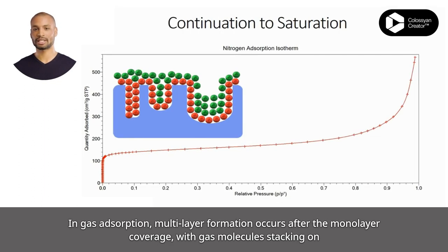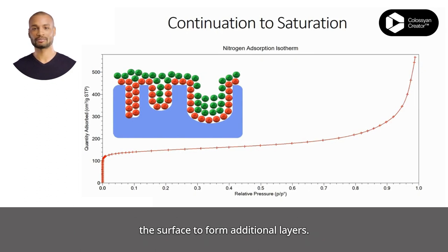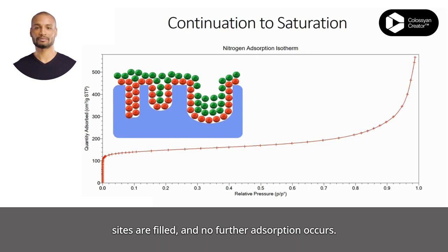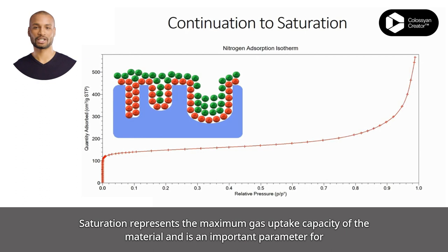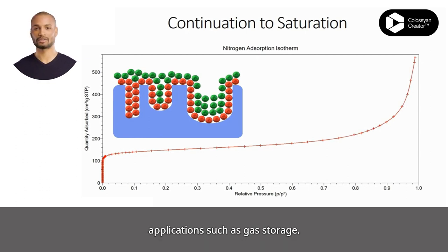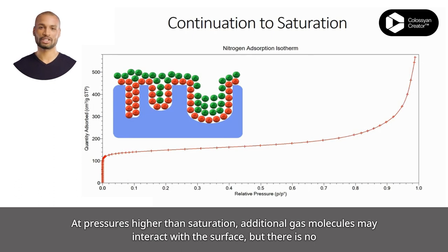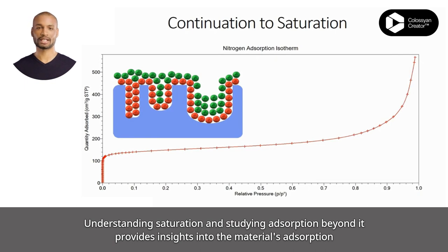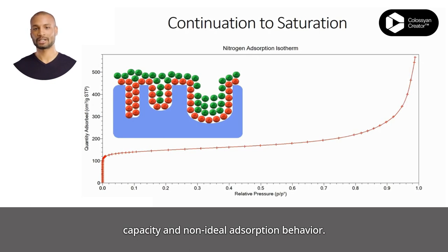In gas adsorption, multilayer formation occurs after the monolayer coverage, with gas molecules stacking on the surface to form additional layers. As the pressure increases further, the adsorption process reaches saturation, where all available adsorption sites are filled and no further adsorption occurs. Saturation represents the maximum gas uptake capacity of the material and is important for applications such as gas storage. Understanding saturation and adsorption beyond it provides insights into the material's adsorption capacity and non-ideal adsorption behavior.